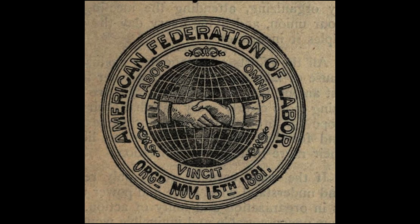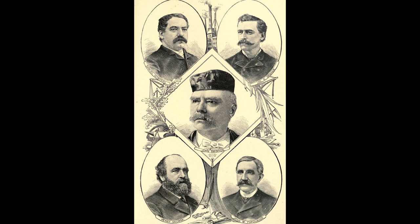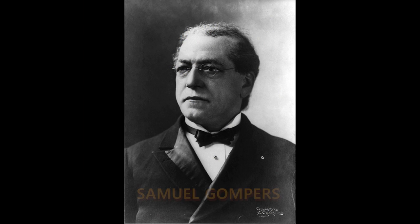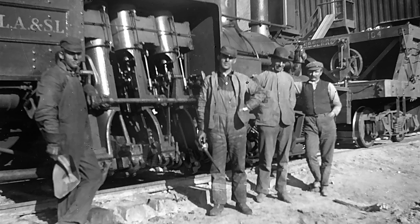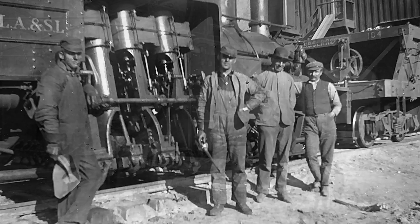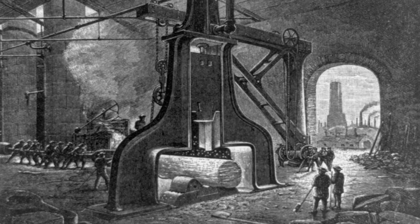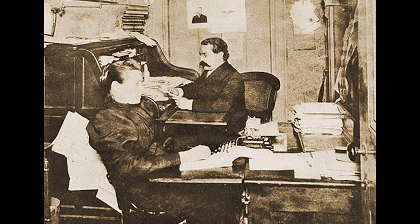A more lasting national organization, the American Federation of Labor — the AFL — was founded during the turbulent 1880s. Led by Samuel Gompers, the AFL adopted a strategy far different from the Knights of Labor. The AFL focused on wages and working conditions, and organizing skilled workers rather than industrial laborers. Political activities were left to other allied groups.